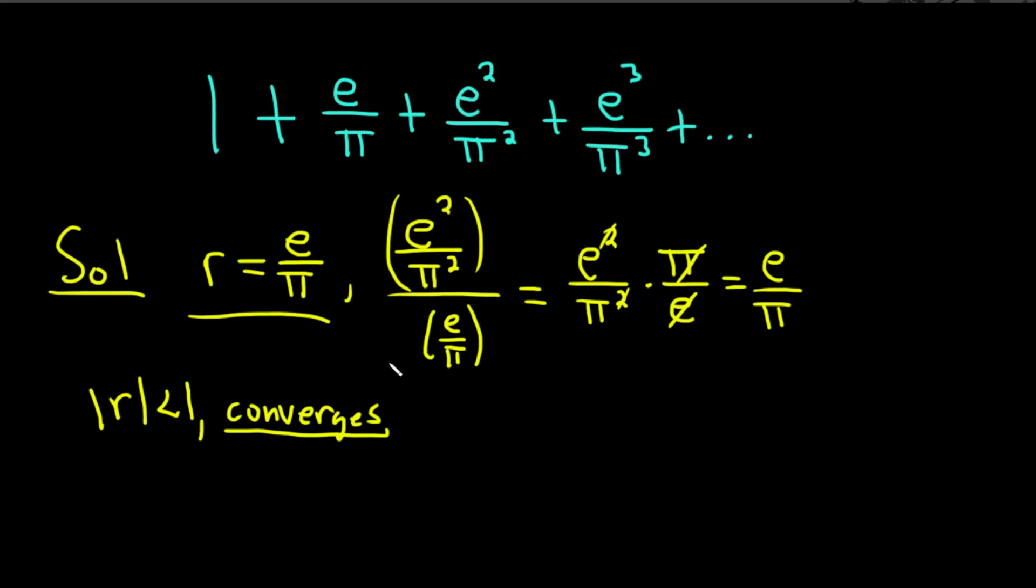To find the number, it's actually really easy. So you just take the first term, which in this case is 1, and then you divide by 1 minus r. So in this case, 1 minus e over pi. And that's the answer. I mean, you could leave it like this. So again, it's just the first term, which happens to be 1, and then you divide by 1 minus r. And that's the answer.